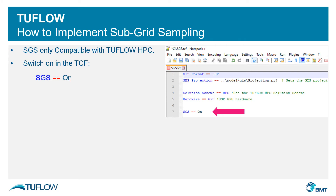We'll now look at how to set up subgrid sampling to be used within a TwoFlow model. The first thing to note is that subgrid sampling is currently only available with the TwoFlow HPC solver — it is not currently available with the TwoFlow classic solver. Subgrid sampling is however compatible with the new quadtree functionality that was released as part of the 2020 version of TwoFlow.